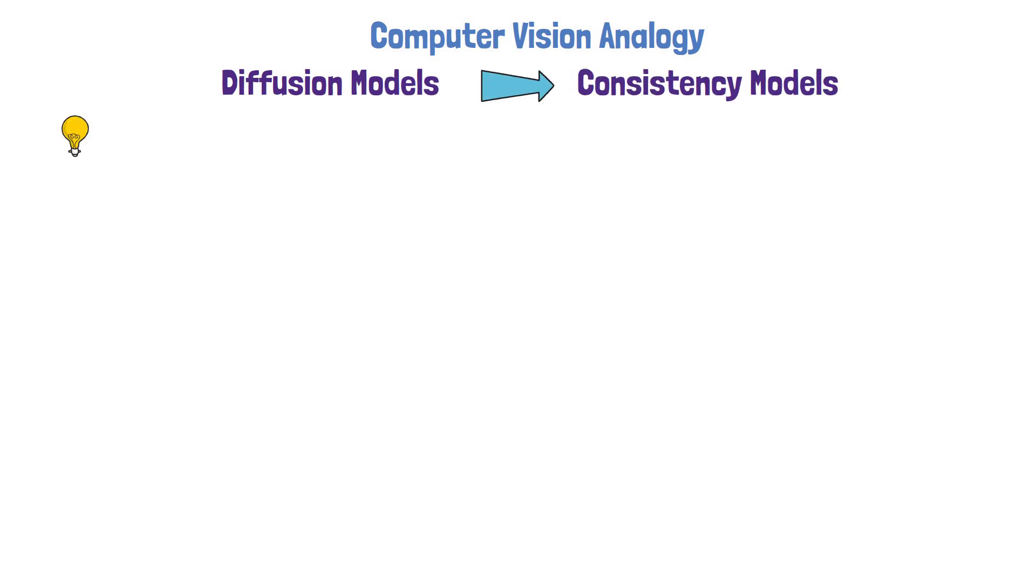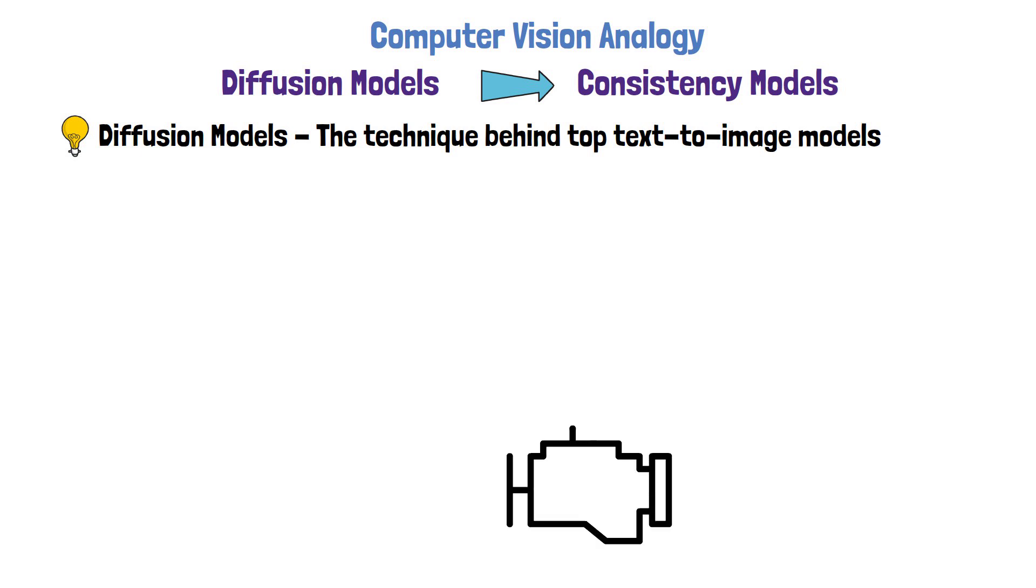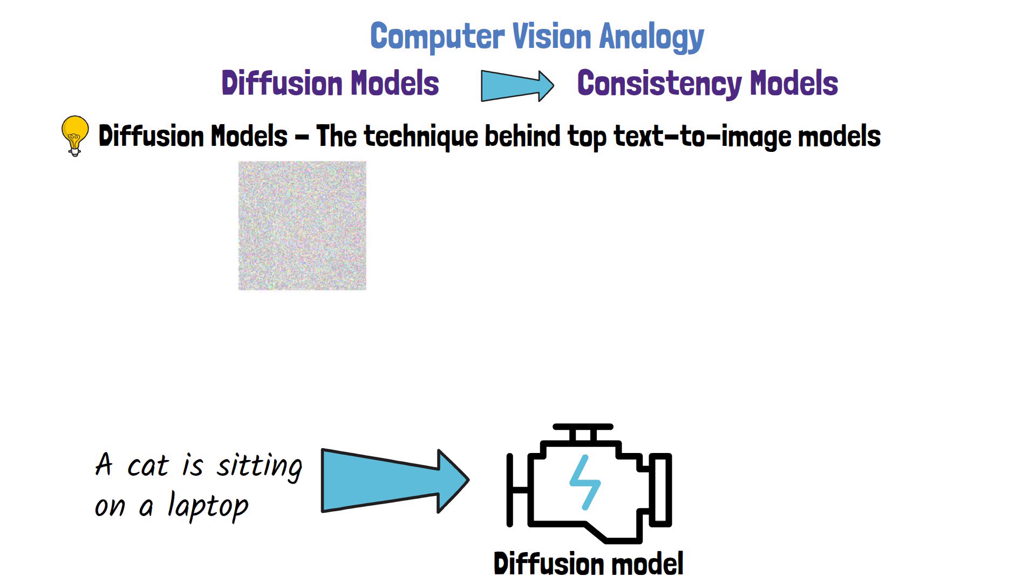The method of consistency large language models has a very strong analogy from the computer vision domain, which is improving the performance of diffusion models using consistency models. Diffusion model is the backbone architecture behind the top text to image generation models. Diffusion models get a prompt as an input such as a cat is sitting on a laptop, and the model learns to gradually remove noise from an image in order to generate a clear image, based on the prompt.